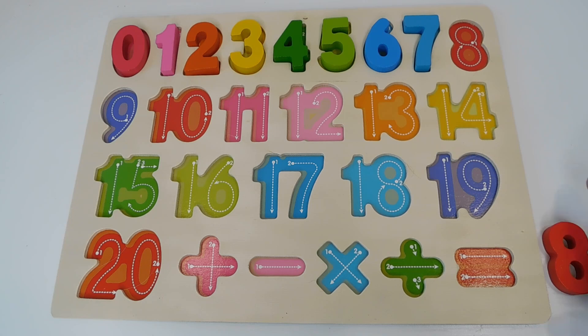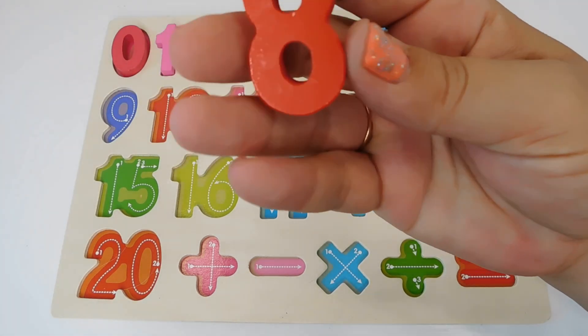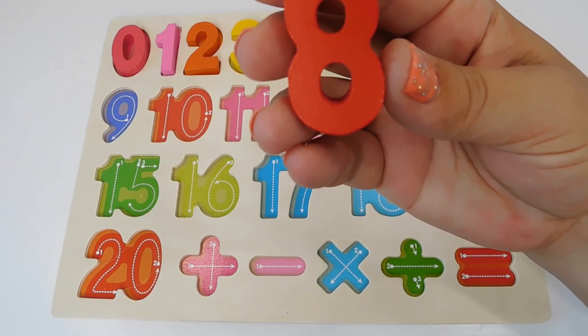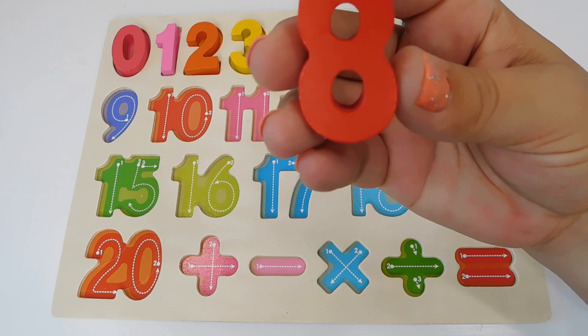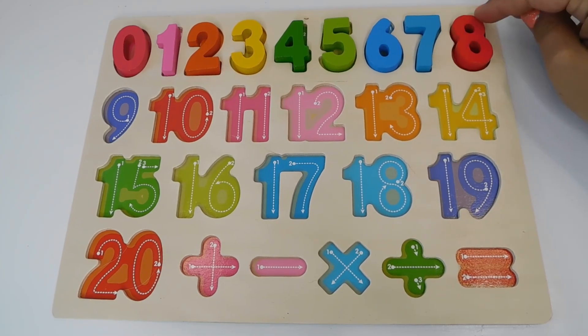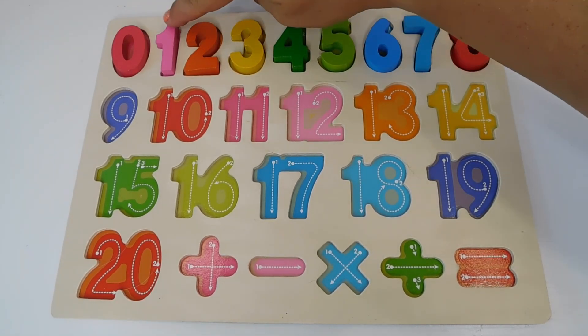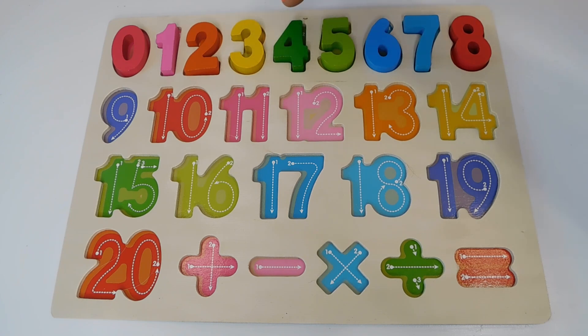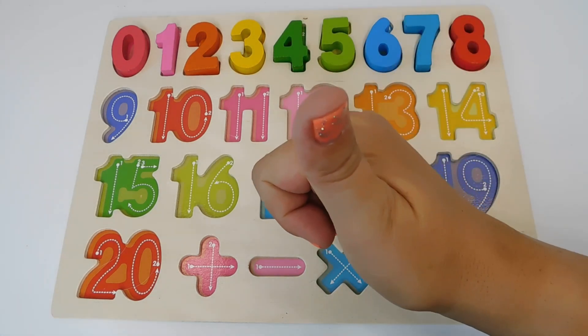Next we need this number. It is number 8. Number 8. This is a red 8. It goes here. 0, 1, 2, 3, 4, 5, 6, 7, 8. Great job.